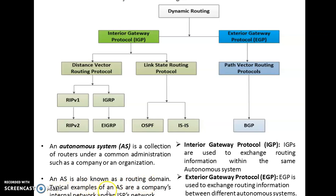Typical examples of an Autonomous System are companies' internal networks and ISP networks. Basically, an Autonomous System is a group of routers administered by a single ISP, company, or organization. IGP is used to exchange routing information within an Autonomous System, so routing that takes place within an Autonomous System is considered IGP.